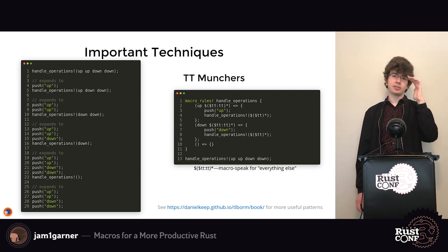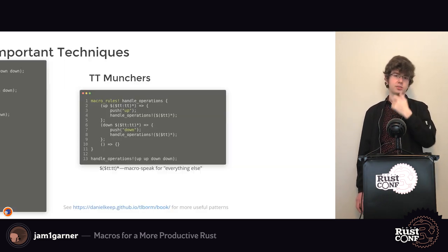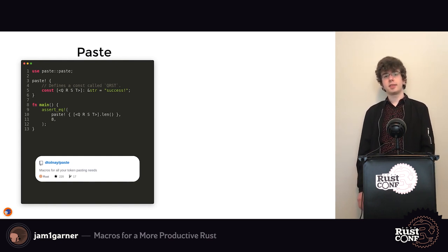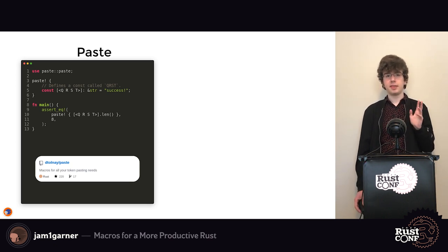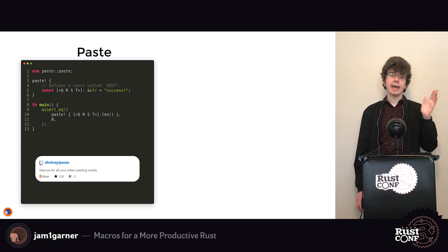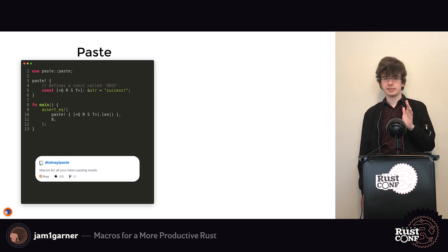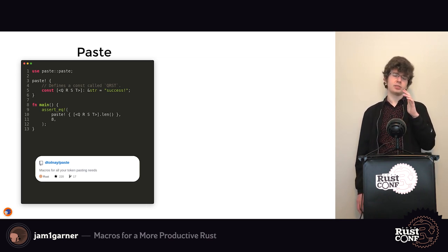This allows multiple repeating tokens where each one has parsing logic for matching `up` or `down`. One really useful crate when writing macro_rules macros is `paste`. One limitation of macro_rules macros is that you can't create new identifiers, but `paste` lets you concatenate different identifiers to create a new one. In the example it concatenates four identifiers — q, r, s, and t — to form `qrst`.